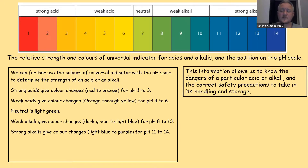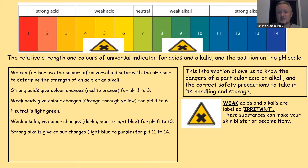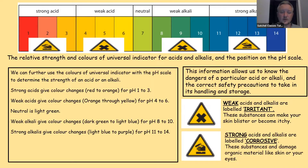This information allows us to know the dangers of a particular acid or alkali and the correct safety precautions for handling and storage. We use hazard symbols to indicate what precautions to take. Weak acids and alkalis are labelled with the irritant symbol — these substances, once applied to your skin, can make it blister or become itchy. Strong acids and alkalis are labelled corrosive — these substances can damage organic material like skin or eyes, and can corrode through metal and wood. They are very dangerous and should be handled with care. The corrosive symbol shows them etching through hands and a bar of wood or metal, covering pH ranges 1 to 3 and 11 to 14.